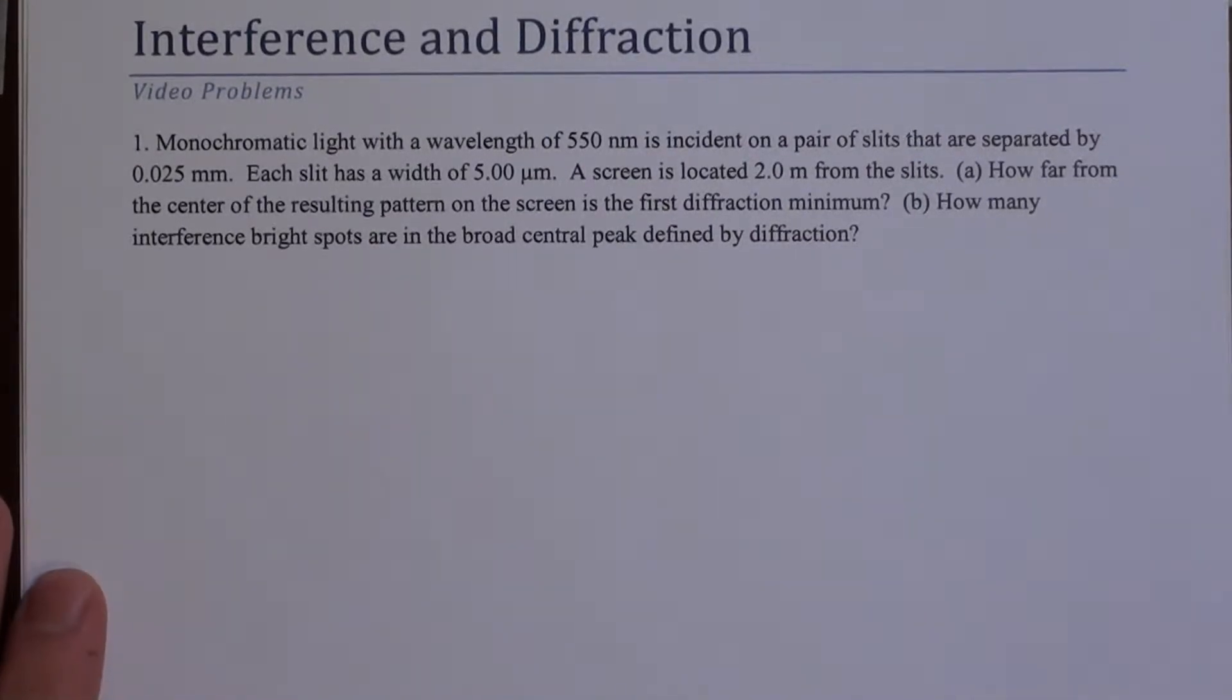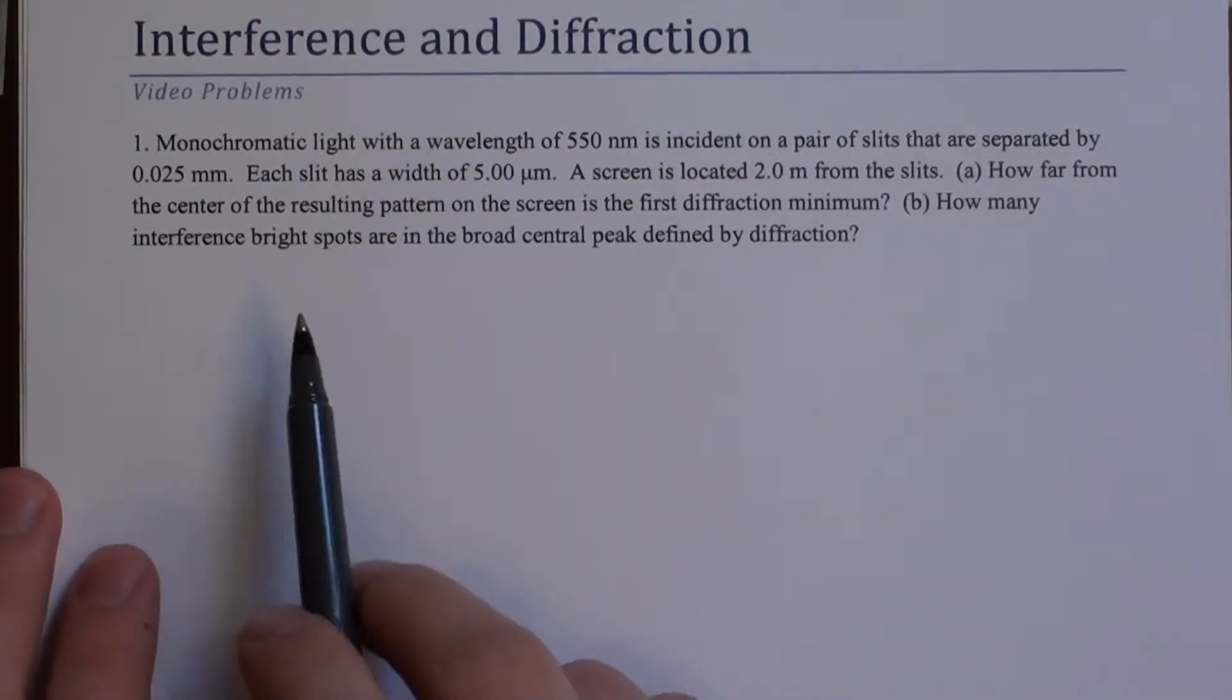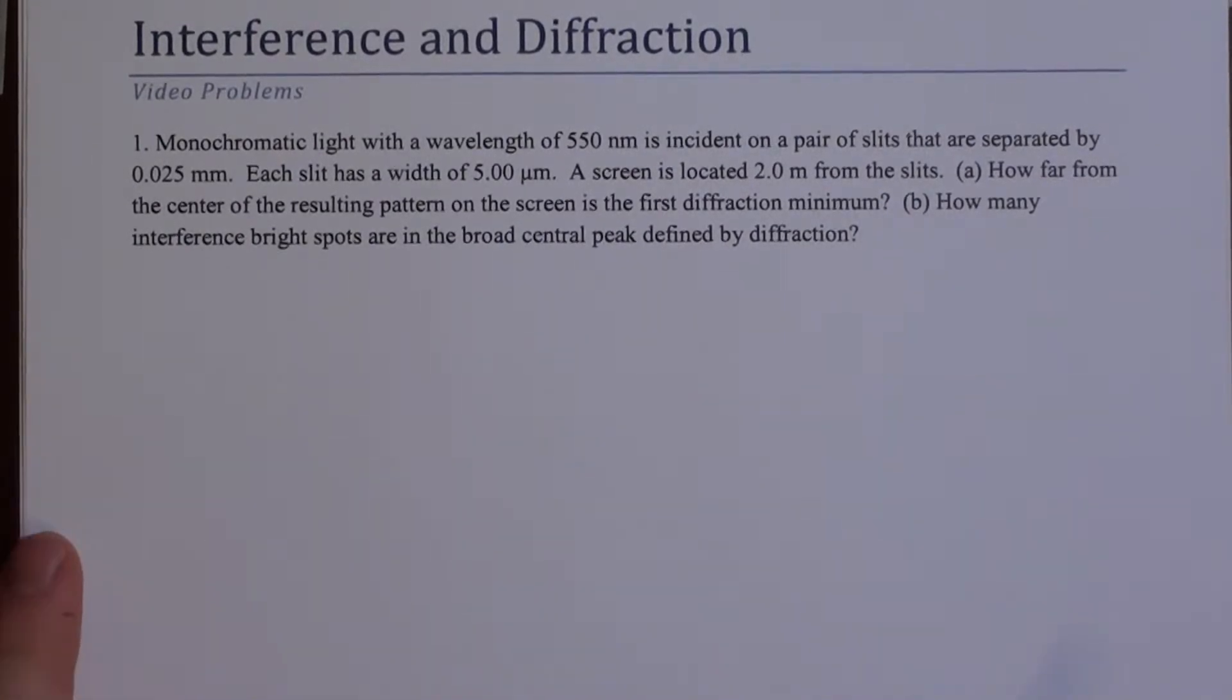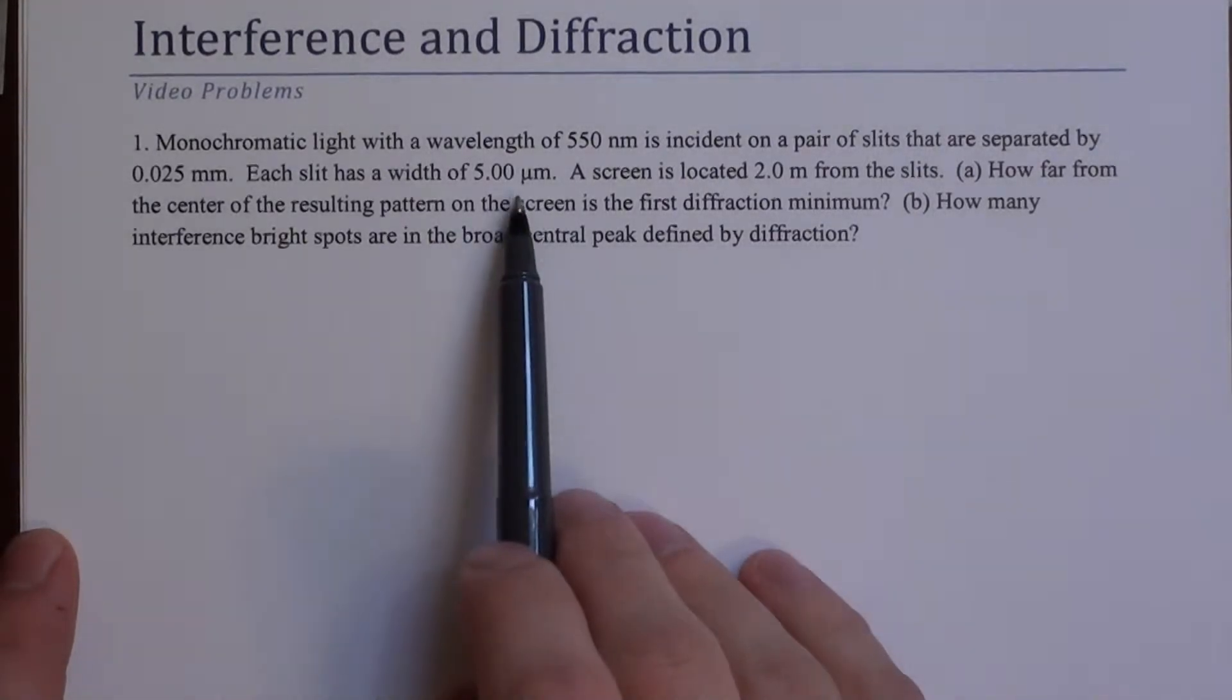Here is a question about interference and diffraction of light. We're told that monochromatic light with a wavelength of 550 nanometers is incident on a pair of slits separated by 0.025 millimeters, and each with a width of 5 micrometers.